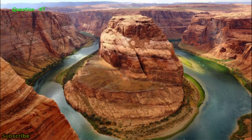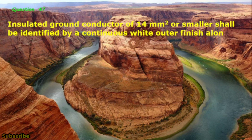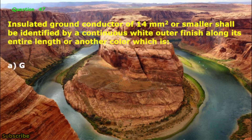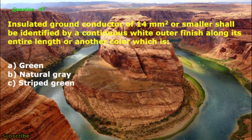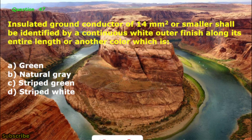Question No. 47: Insulated ground conductor of 14 mm² or smaller shall be identified by a continuous white outer finish along its entire length, or another color which is: A. Green, B. Natural gray, C. Striped green, D. Striped white. The correct answer is letter B: Natural gray.